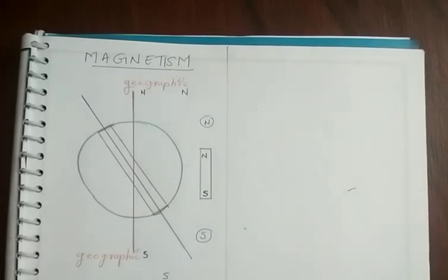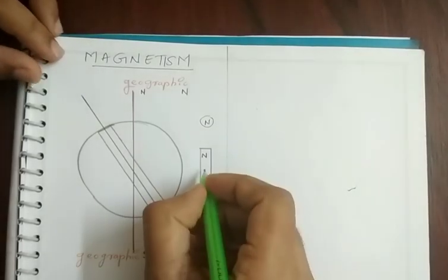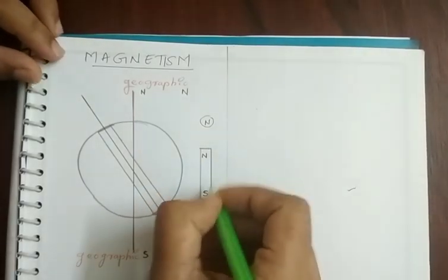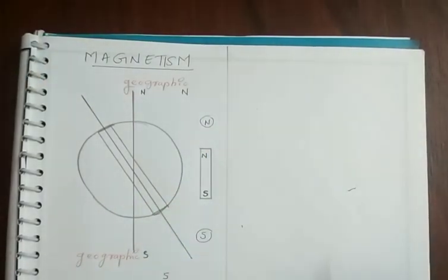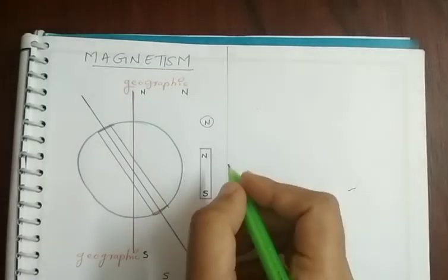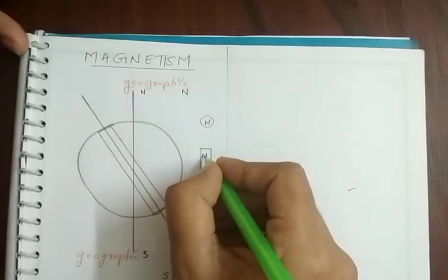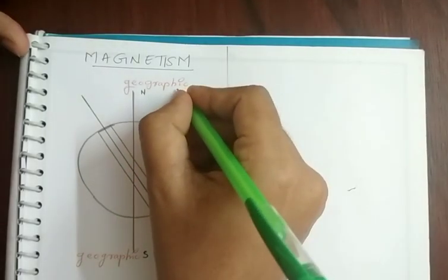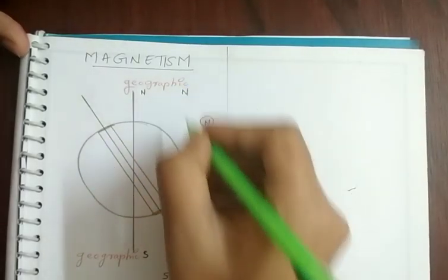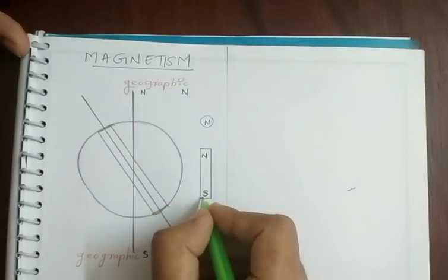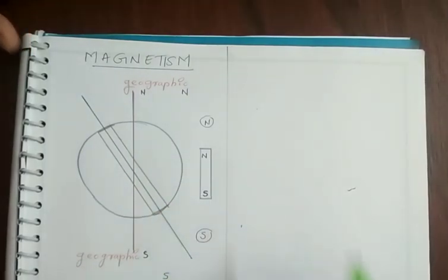Now, what is a magnetic north pole and magnetic south pole? We have already studied that whenever you freely suspend a bar magnet, the magnet finally aligns such that its north pole faces earth's north pole and its south pole faces earth's south pole. That's what we have already discussed.